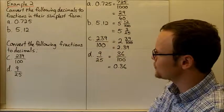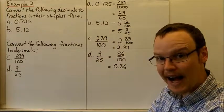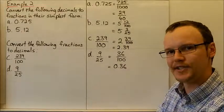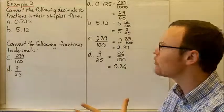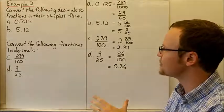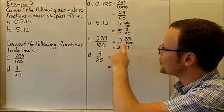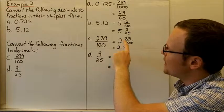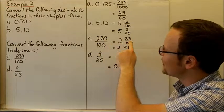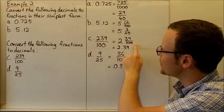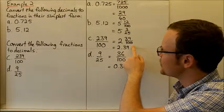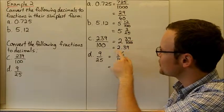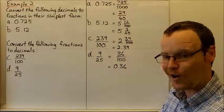For 239 hundredths — if I've got 200 hundredths, that's two whole numbers, so that's two units. And we've got 39 hundredths left over. So that's going to be 2 and 39 hundredths, which is 2.39.